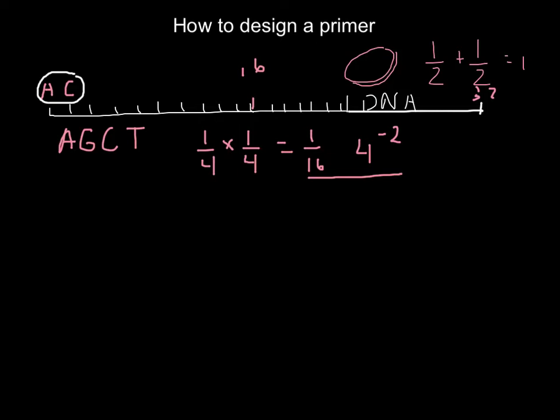So it can be any two bases. AA, CC, GC, TA, it doesn't matter. Just two bases going to happen in such a particular sequence every 16 bases.